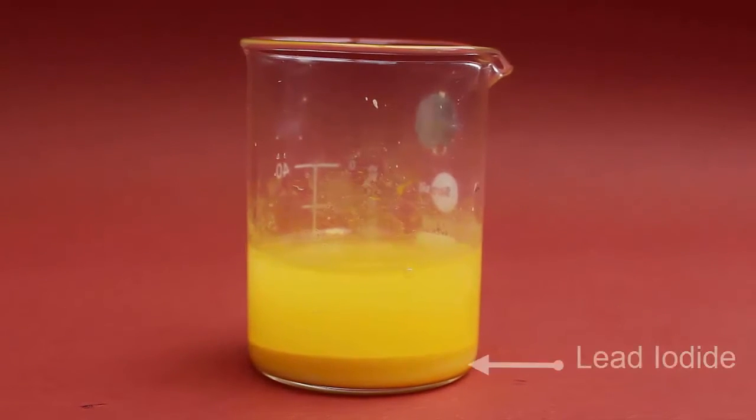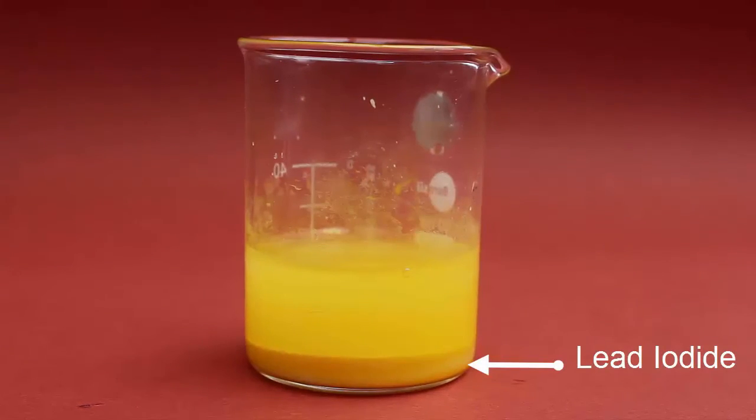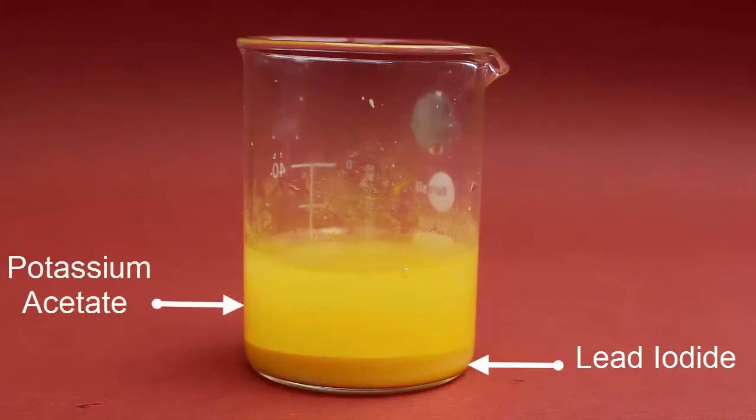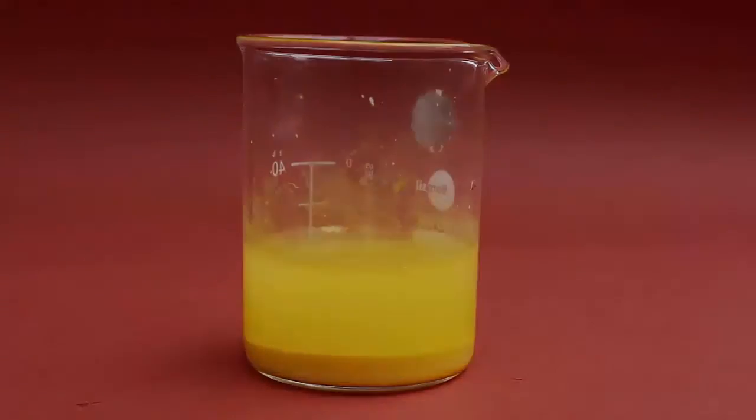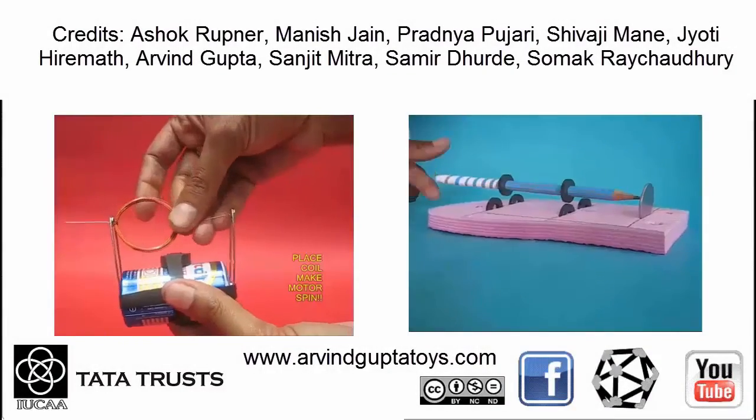The lower layer will be the thick precipitate of lead iodide and the layer floating on the top slightly liquidy will be potassium acetate.